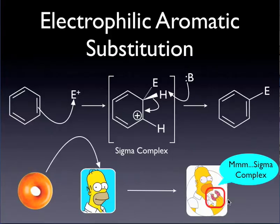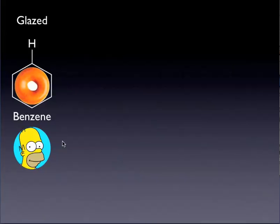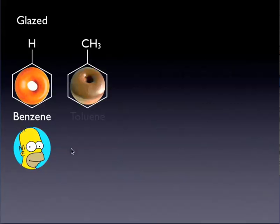Let's see what happens when we start introducing substituents on our aromatic ring. The simplest substituent is hydrogen — just your standard benzene ring — which we can think of as a glazed donut, particularly sweet. If we replace that hydrogen with a methyl group, this changes the name of our molecule to toluene, and has the effect of putting icing on our glazed donut, making it particularly more sweet. This is because the methyl group is donating electron density to the benzene ring through the sigma bond — an inductive effect.